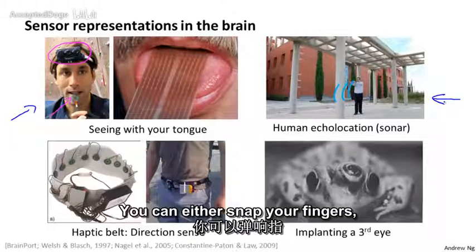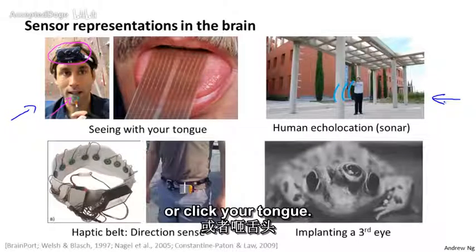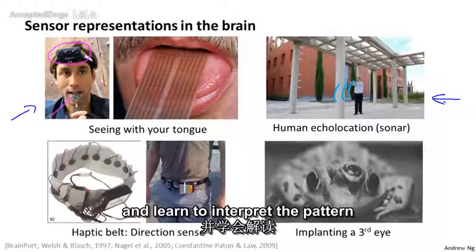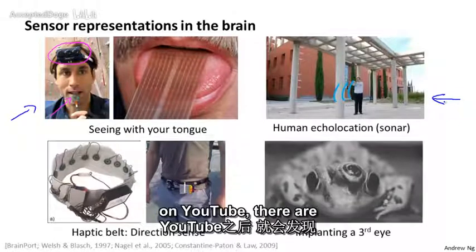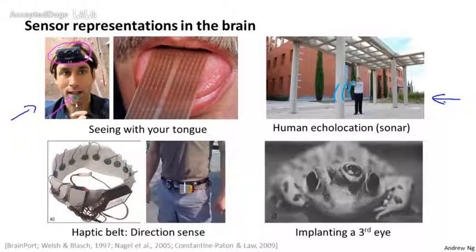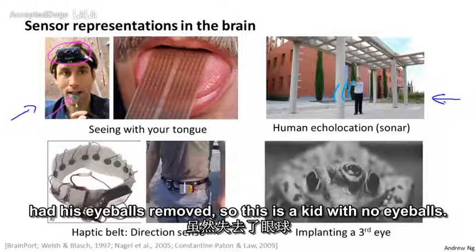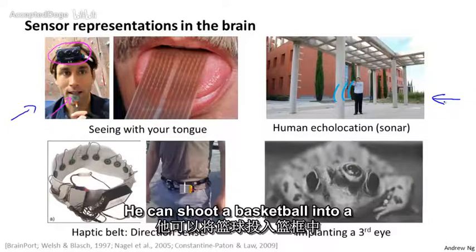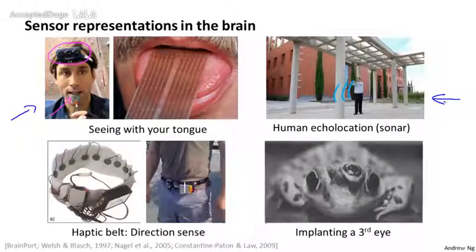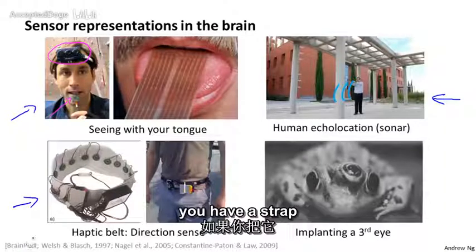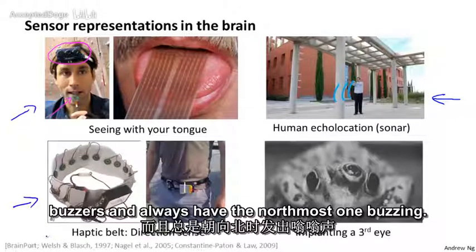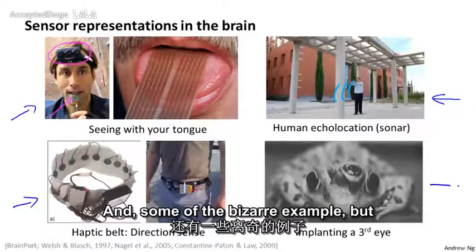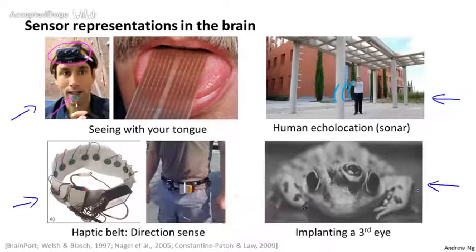There are two ways you can do human echolocation — you can either snap your fingers or click your tongue. There are blind people today being trained in schools to interpret the pattern of sounds bouncing off their environment as sonar. There are actually videos on YouTube of an amazing kid who tragically had his eyeballs removed because of cancer, but by snapping his fingers he can walk around and never hit anything, ride a skateboard, and shoot a basketball into a hoop. Third example is the haptic belt — a ring of buzzers around your waist that always has the northmost one buzzing, giving a human a direction sense similar to how birds sense north. And if you plug a third eye into a frog, the frog will learn to use that eye as well.